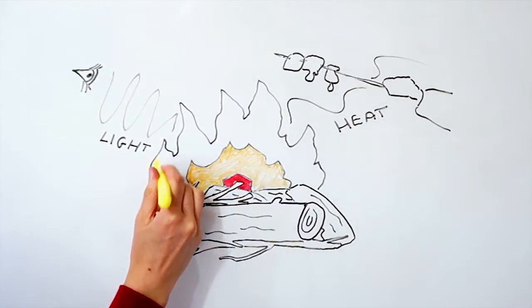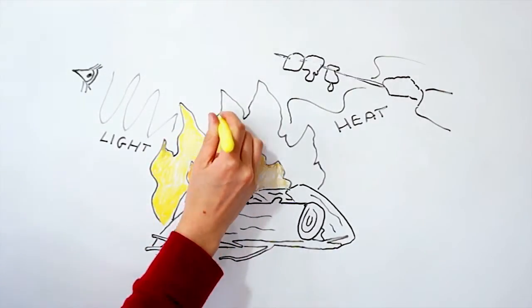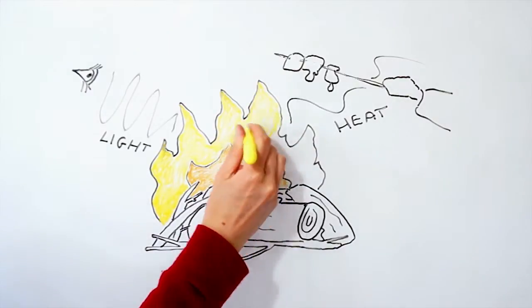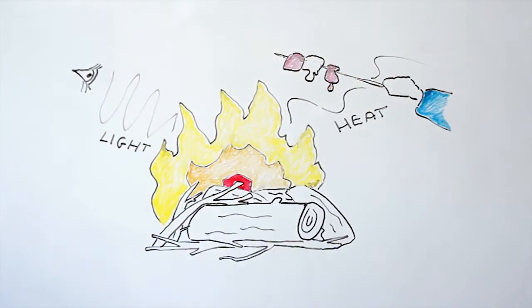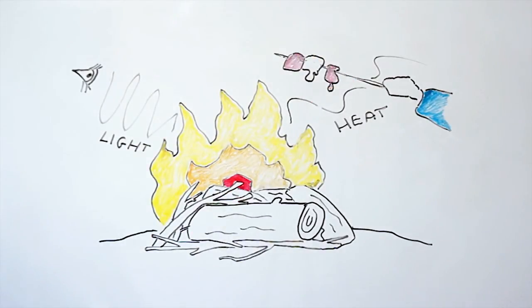The different types of bonds in a fuel release different amounts of energy. Some will release lots of light energy, which we see as flames, and some will release lots of heat energy, which we feel as warmth. It is the pyrolysis of these different bonds which gives fire its characteristics.